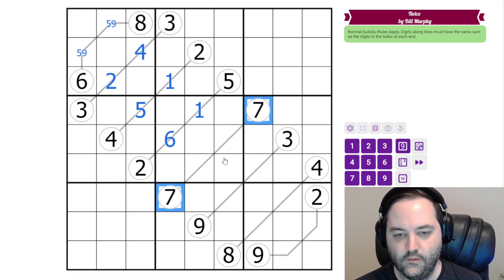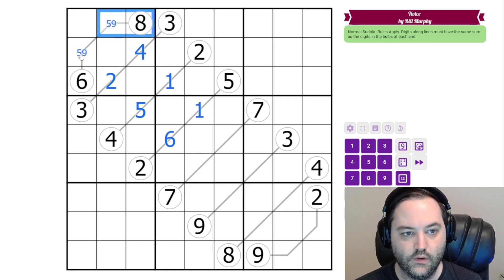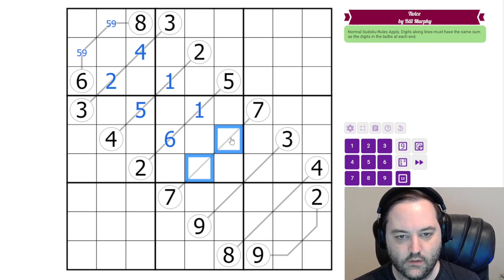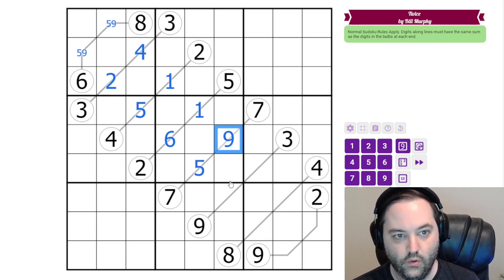Here we have seven and seven which is fourteen. We know the ways that we can make fourteen here. Eight and six, five and nine. We have a six in the box. So this has to be five nine in this order.